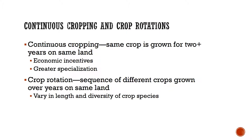Differences between continuous cropping and crop rotation: continuous is growing the same crop in the same field for two years or longer. There are some crops used for this and it has good money incentives — you're able to make a little bit more money in some cases, but there's much more specialization that goes into the management and growing part of that crop. Crop rotation is just the sequence of different crops grown year over year in the same land, varying in diversity, length, and the different hybrids or varieties within those crops.